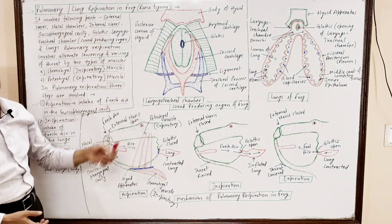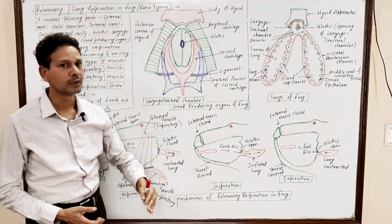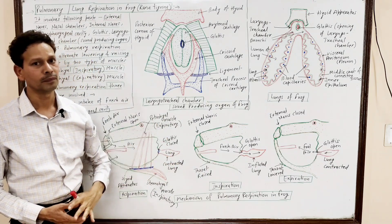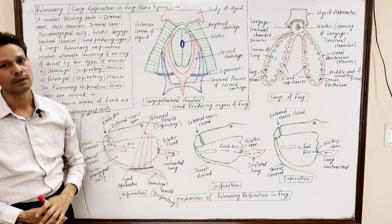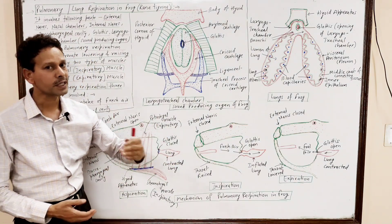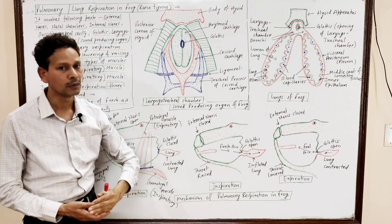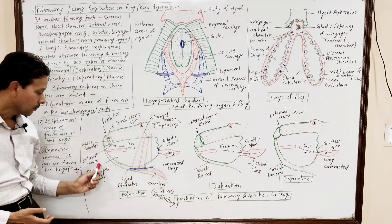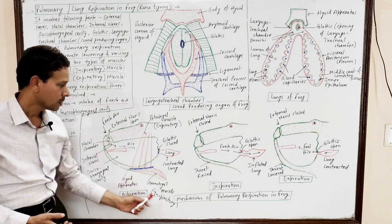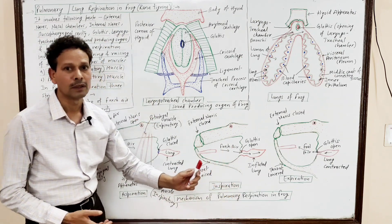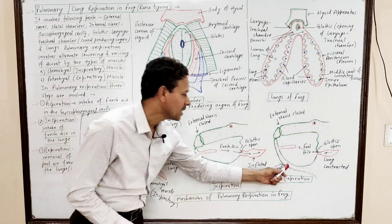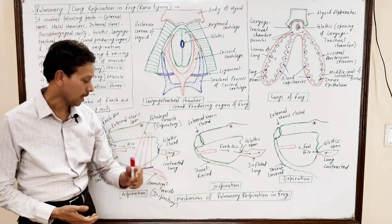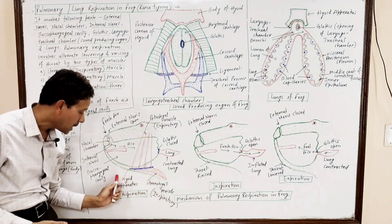This entire pulmonary respiration in case of frog is divided into three steps: first is aspiration, second is inspiration, and the third step is expiration.